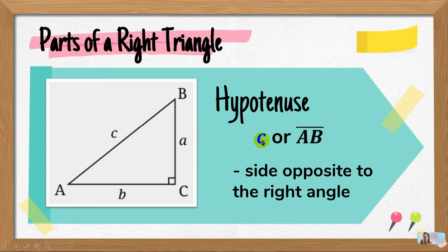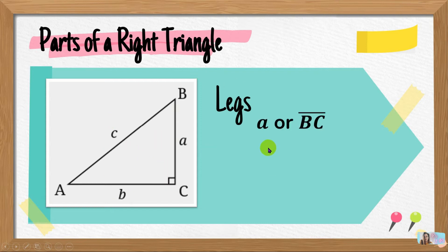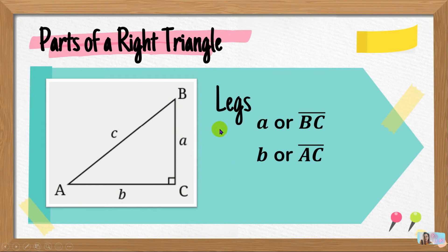The sides that are not opposite the right angle are called legs. So we have side A and side B — they are the legs of triangle ABC. Side A can also be named as side BC or CB, and side B can also be named as side AC or CA. So the sides of a right triangle are called hypotenuse when opposite the right angle, and legs when they form the right angle.